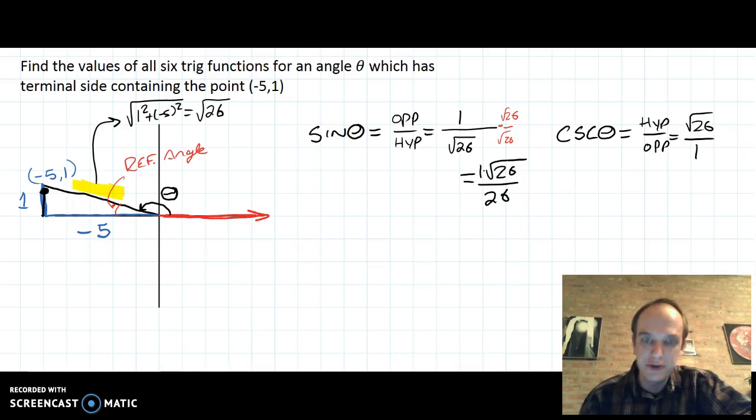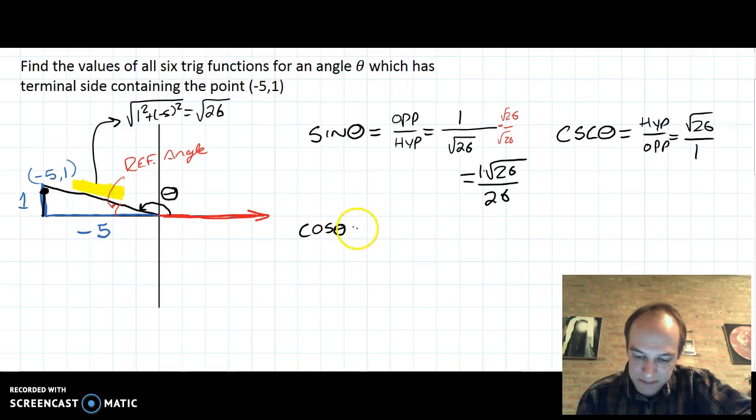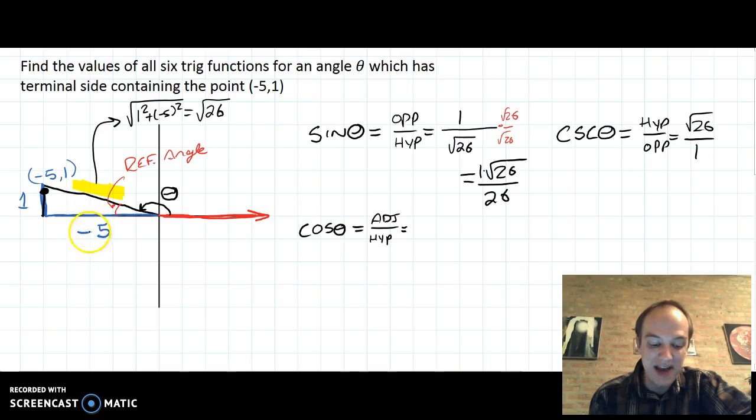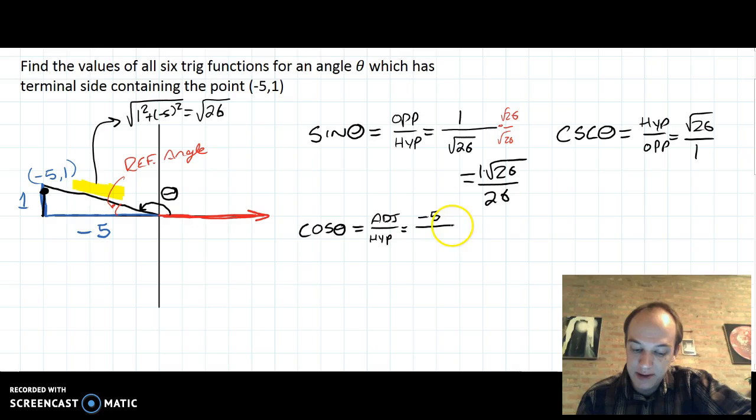Let's move on to cosine. Cosine of theta will equal adjacent over hypotenuse. The adjacent in this case is -5. The hypotenuse is the square root of 26.